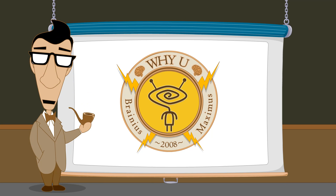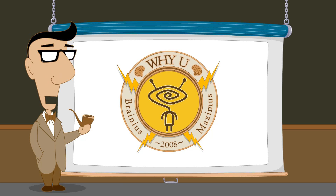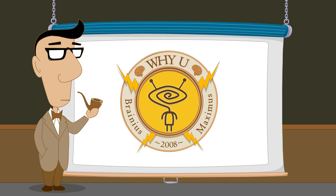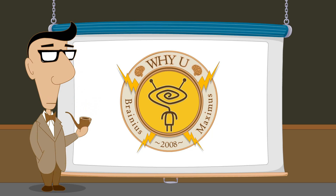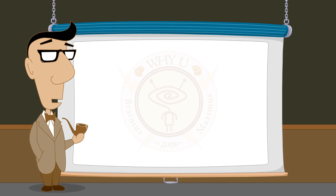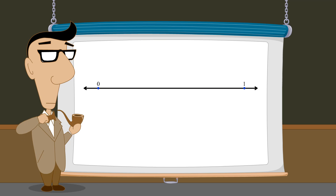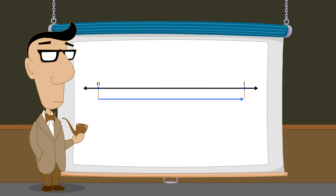Hello, I'm Professor Von Schmohawk, and welcome to Why U. In the last lecture, we saw how ancient people came up with the idea of fractions as a way to represent numbers between zero and one.